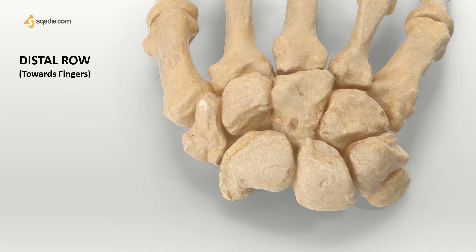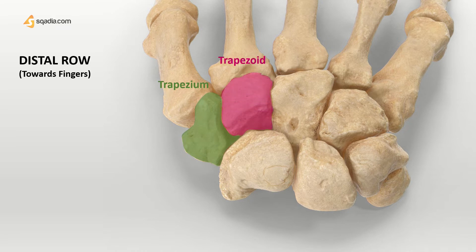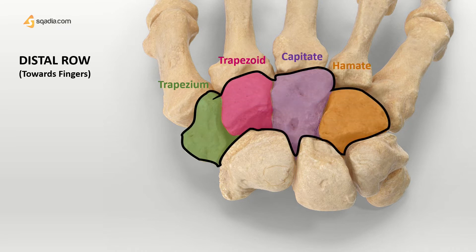Moving to the distal row, we have the trapezium bone, the trapezoid, the capitate, and the hamate bone. You can remember it by: try to catch her.